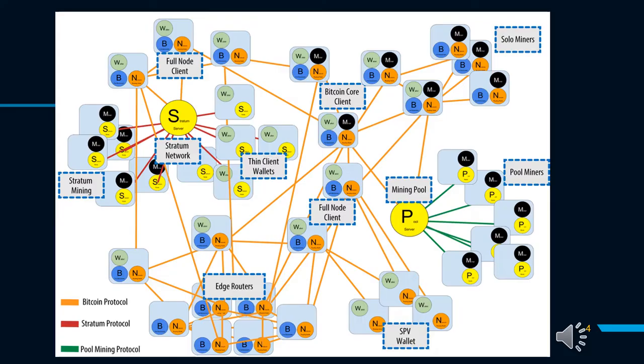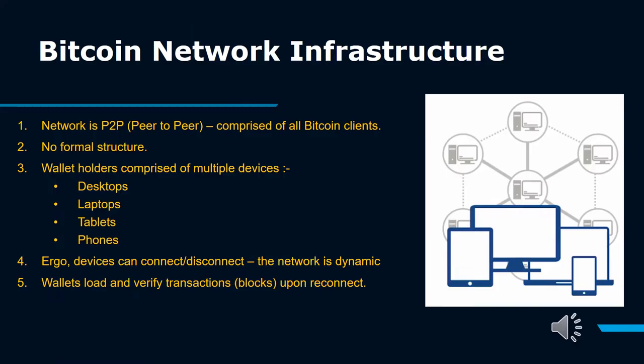The given figure shows the extended Bitcoin network showing various node types, gateways, and protocols. Here you can see how complex networking is in the Bitcoin network.